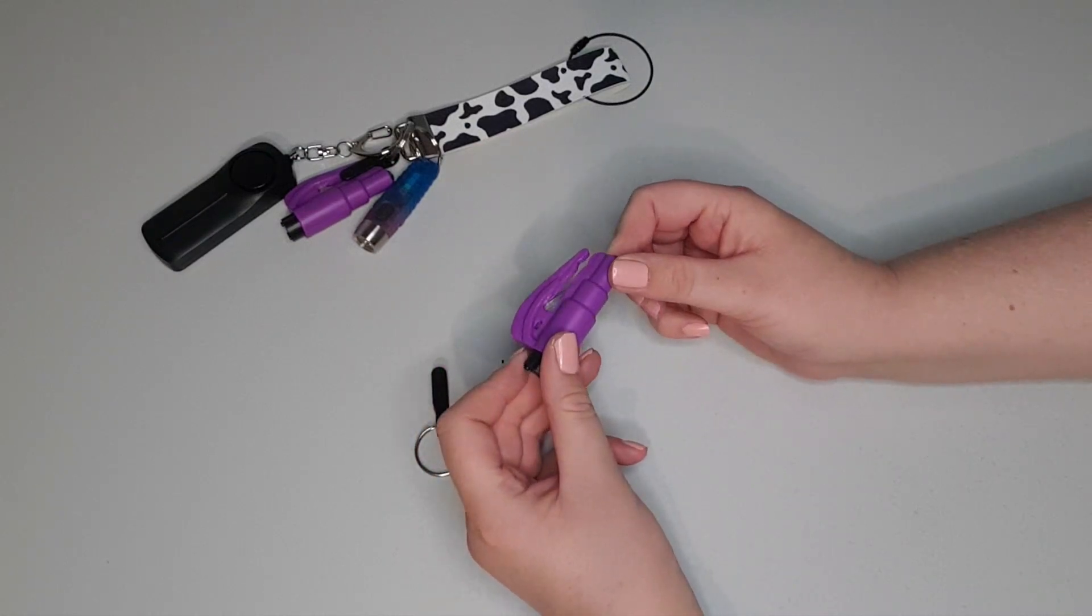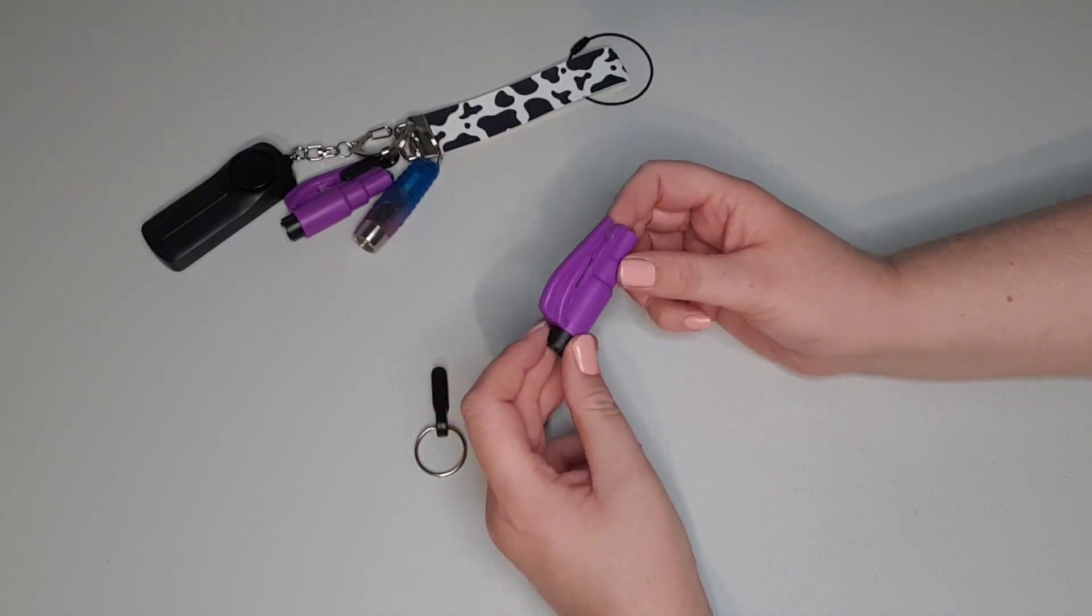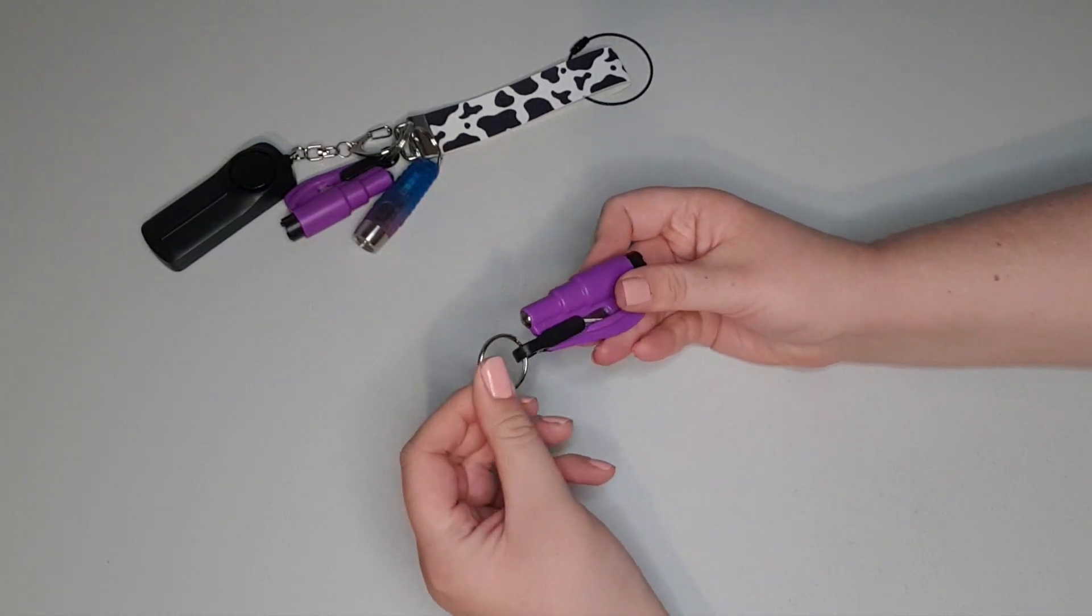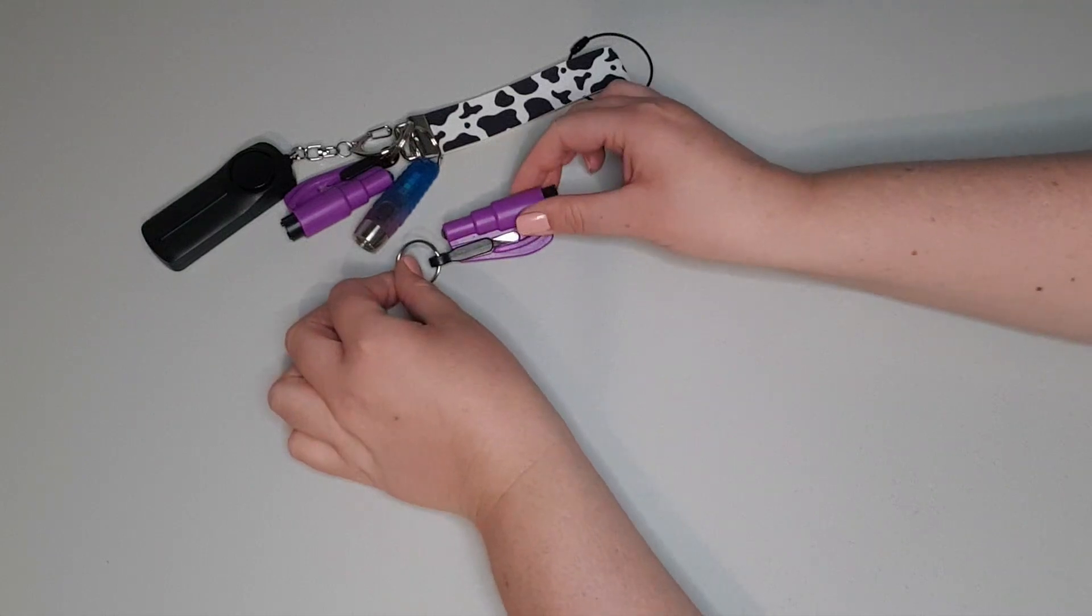So even if you don't want to have this on your keychain, that's fine. Take it off and have it in the console of your car. You can see, you just put the tab back on and the jump ring will go on to your keychain.